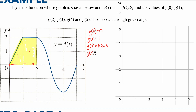g of three is going to be the area of the curve from zero all the way until you get to three. Taking a rough sketch of this area, think of it as close to a triangle. So again, it's going to be one half times the base times the height, which is one. So one plus two plus one is going to be four. g of three, from zero all the way to three, is the area under the entire portion up until that point.